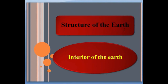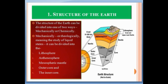Today we learn about the structure of the Earth. In this video we talk about the interior of the Earth and how many layers are in the structure of the Earth. The structure of the Earth can be divided in one of two ways: first mechanically and second chemically. Mechanically, or rheologically — meaning the study of liquid states — it can be divided into five layers.